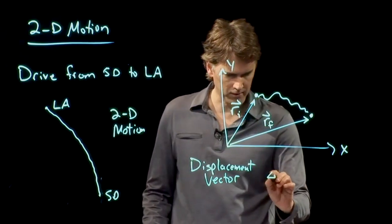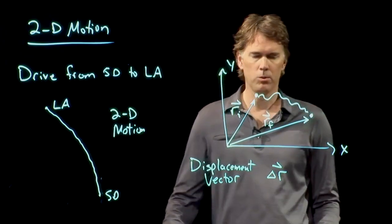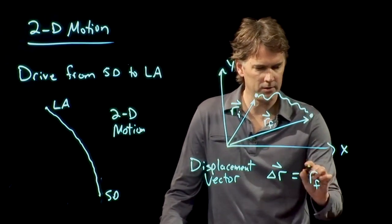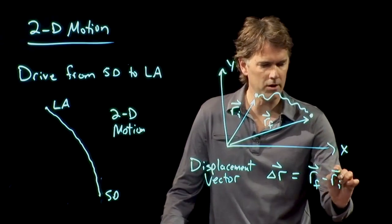And the displacement vector, delta R, which is where did you go, it is R final minus R initial. Okay, there's our R final. That was our R initial.